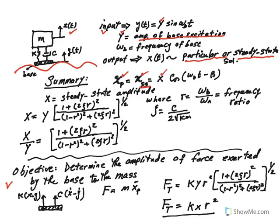If we assume a particular solution, which is also known as steady state, some amplitude X times cosine omega b t minus some phase angle beta, then X is called the steady state amplitude. And it could be shown that X is equal to Y, which is the amplitude of the base excitation, times this bracket which involves frequency ratio and zeta. Be careful, this whole thing is under a radical or raised to power one half.